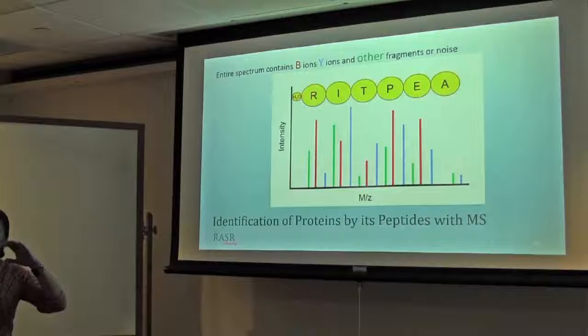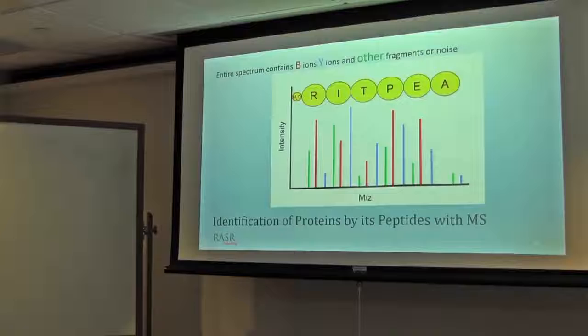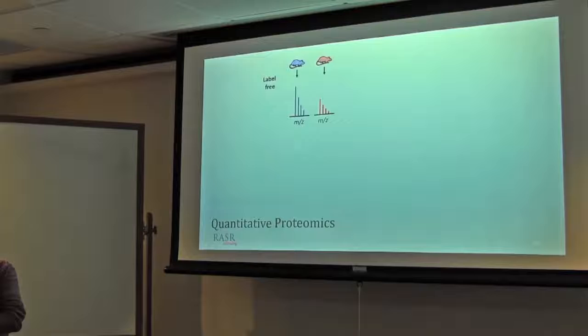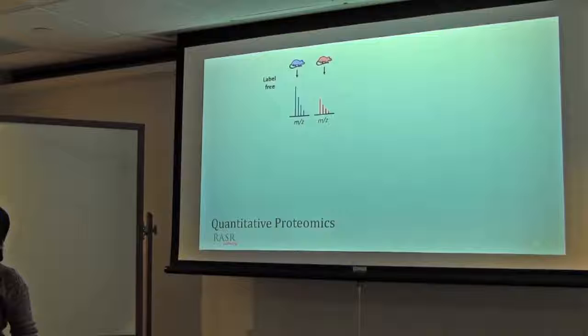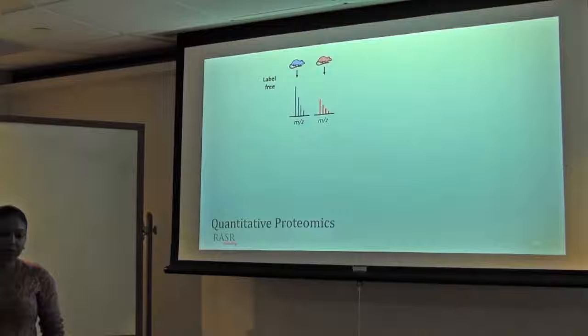We started from peptide and going back towards protein, that shows the bottom-up approach. Now, moving towards quantitative proteomics. All these approaches, either it is 2D gel, 2D-DIGE, or direct mass spectrometry, it is going to give you identification. But you cannot have how much of your protein or the peptide is present.